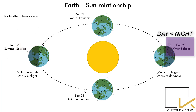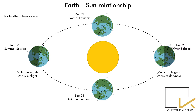Winter Solstice is the day when the sun hours in a day are minimum and usually occurs on 21st December. The rays are slanting and the region experiences low temperatures. At this point, the Tropic of Capricorn receives perpendicular rays, thus increasing the temperature there.